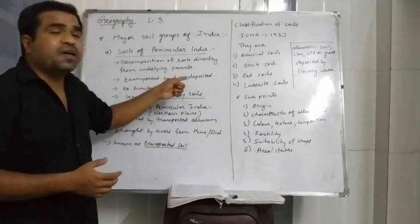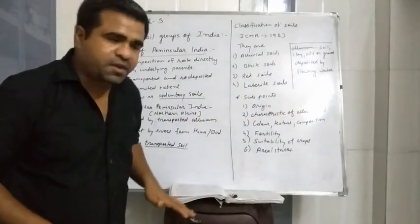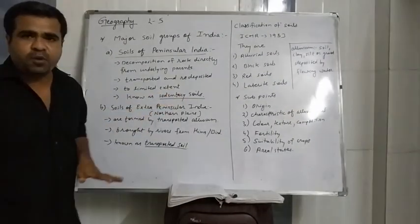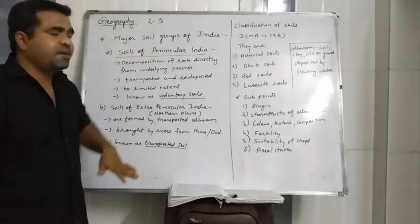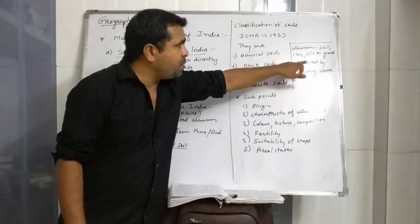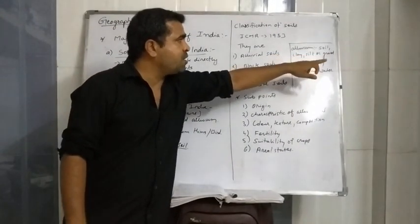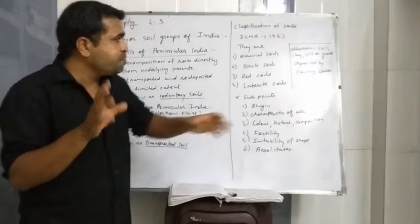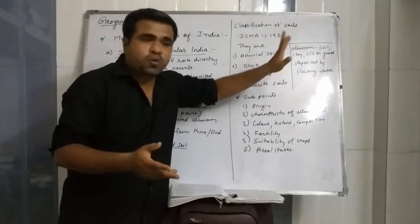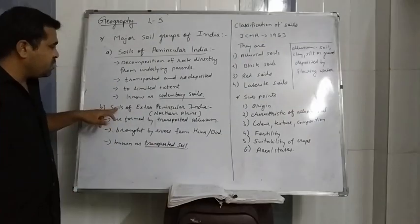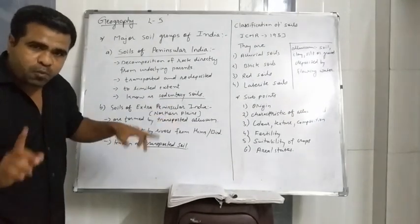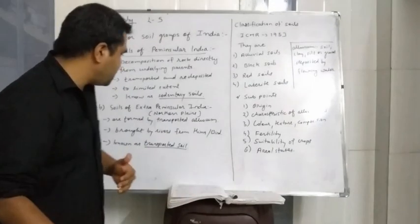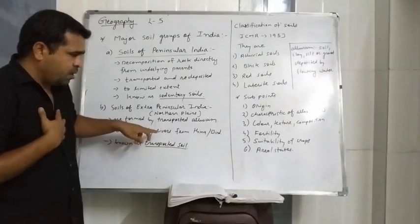In Extra Peninsular India, there are different particles found in the soil — clay, silts, and gravel. Water-deposited soil is called alluvium. The soil of Extra Peninsular India, also known as Northern Plains, is transported alluvium.